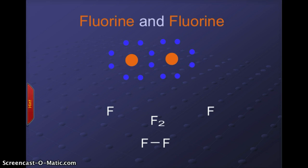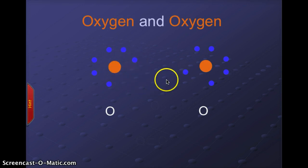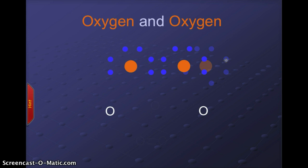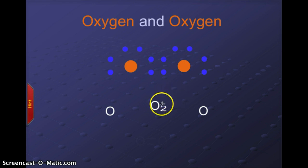Oxygen has six valence electrons, meaning it has two empty spaces. What oxygen does is rearrange its electrons so that it forms a double shared pair in the middle, so that each atom has the sensation of having eight electrons filling its outer orbit. Like hydrogen and fluorine, this is a diatomic molecule — O₂ — but in this case O₂ is formed by a double bond, sharing two pairs of electrons between the oxygen atoms.